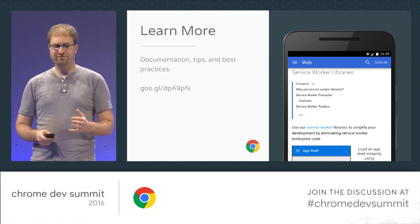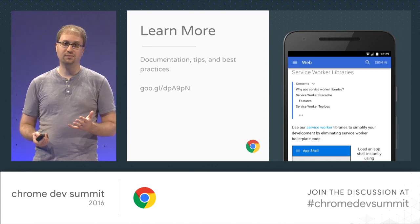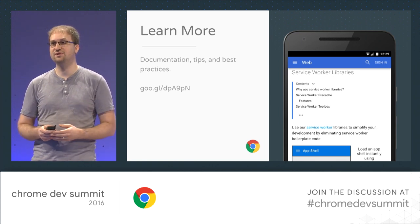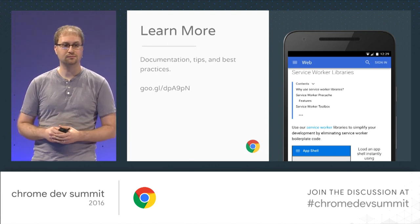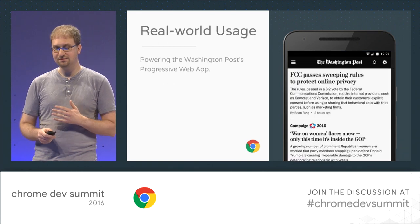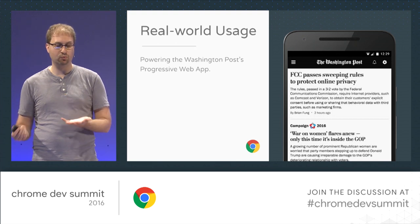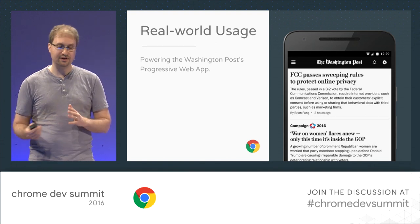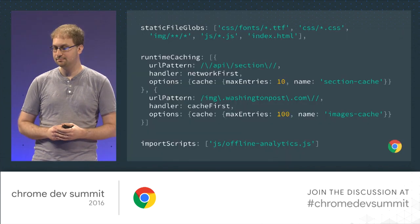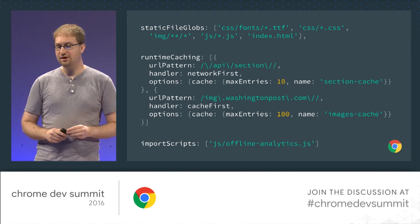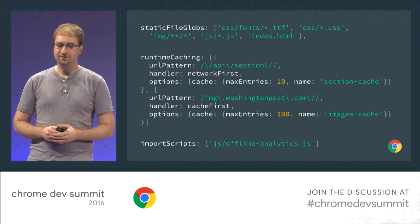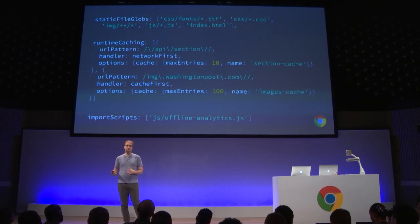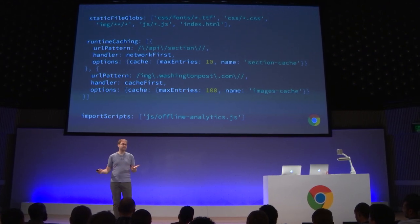I've barely scratched the surface of what swprecache and swtoolbox can do or how to configure them, but I'd encourage folks to visit our new service worker libraries landing page to learn more — we have tons of examples, links to previous videos, and articles about best practices. Rather than just taking my word on the value, let's dive into a real-world deployment: the Washington Post's progressive web app, and see how they're using swprecache and swtoolbox. We're looking at a very lightly edited version of their entire swprecache configuration.